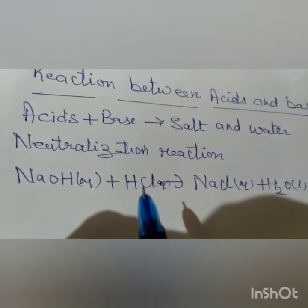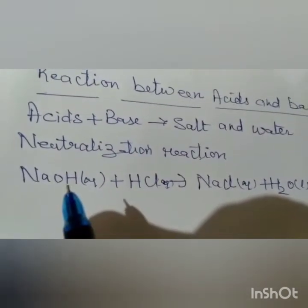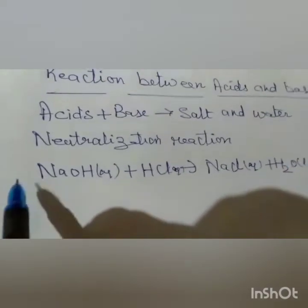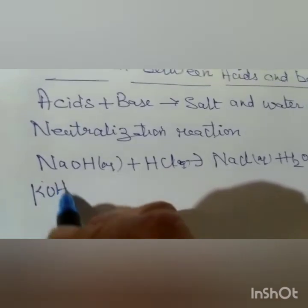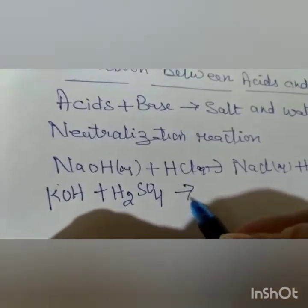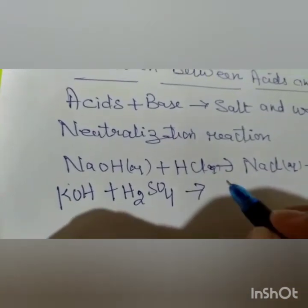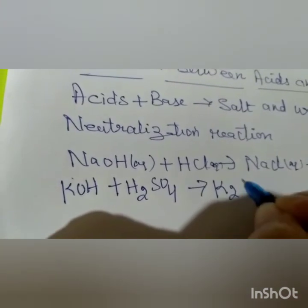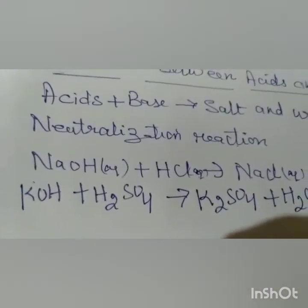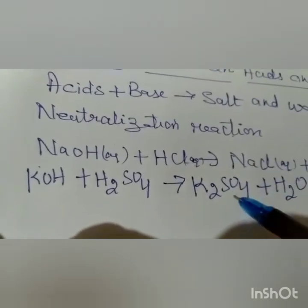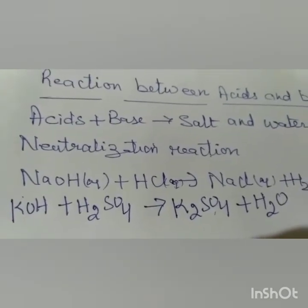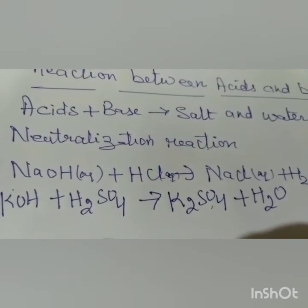In the neutralization reaction, acid taken is hydrochloric acid, base taken is sodium hydroxide, and NaCl is the salt and H₂O is water formed. You can take other bases also — for example KOH (potassium hydroxide) plus H₂SO₄ (sulfuric acid) gives salt and water, that is K₂SO₄ (potassium sulfate) plus H₂O. The valency of sulfate is 2 and valency of potassium is 1, so you get potassium sulfate. You can see activity 2.6 given on page 21.